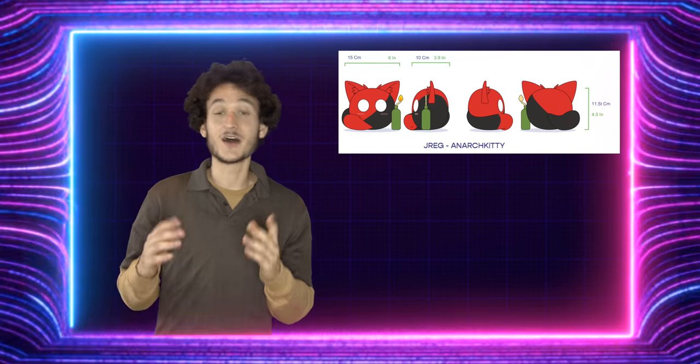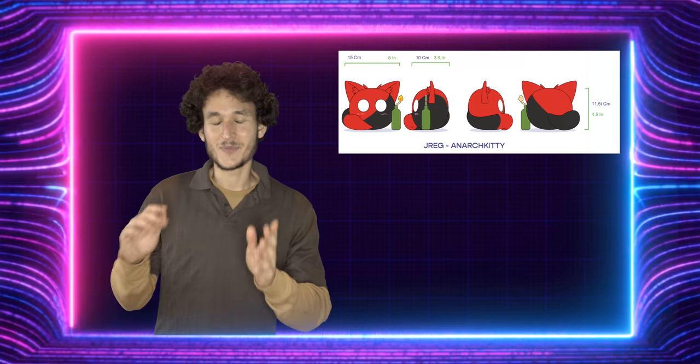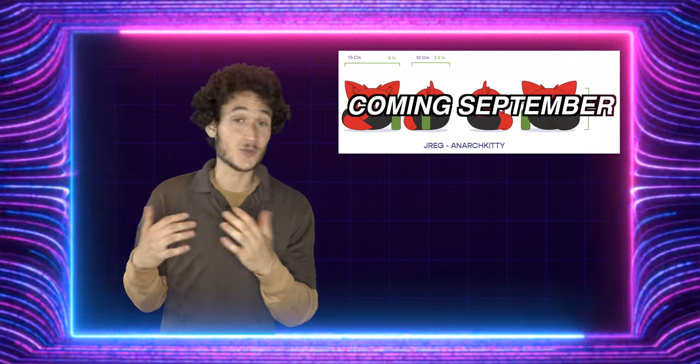So let's dig deep into an example. Let's take anarcho-communism. Anarcho-communism is a political framework, a political ideology you could say, that posits certain axioms about the world and people. Anarcho-communists believe in classless, stateless, moneyless societies.